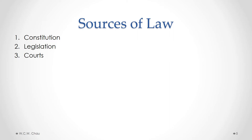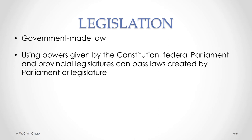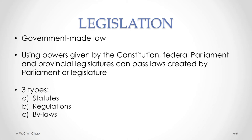There are three sources of law in Canada. The first is the constitution, which we will talk about in detail in the next module. The second is legislation, or government-made law, and the third is the courts. Legislation is law created by any type of government in Canada — it could be the federal government, provincial government, or a municipal government. The three types of legislation are statutes, regulations, and bylaws.